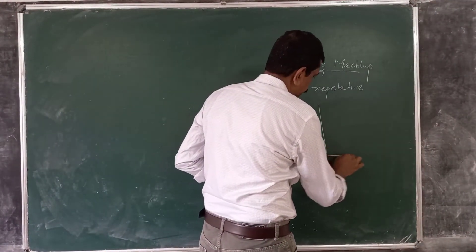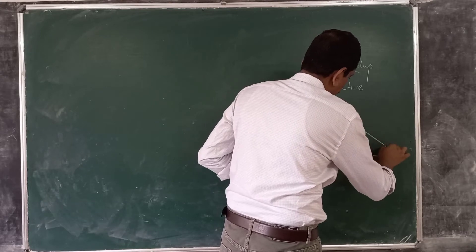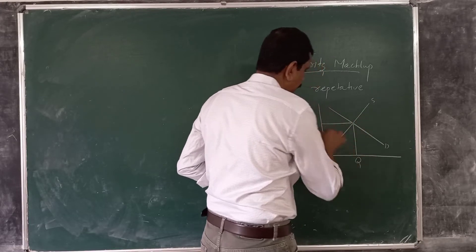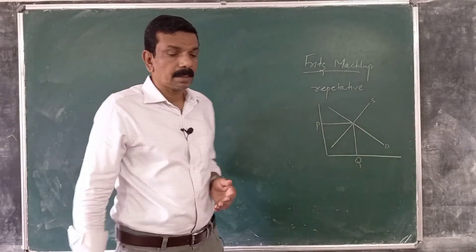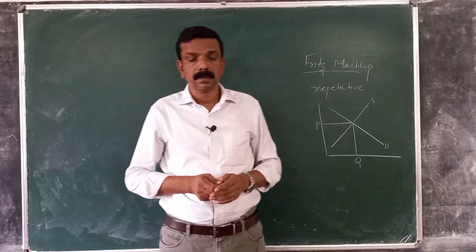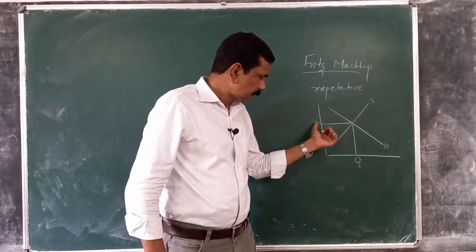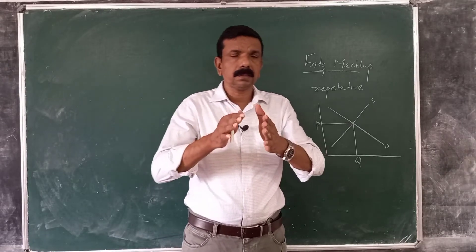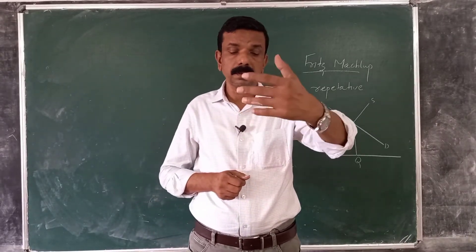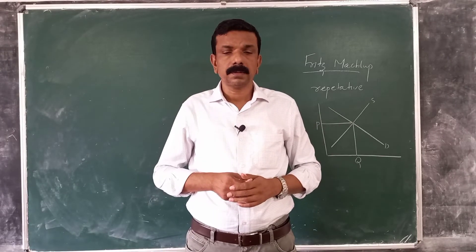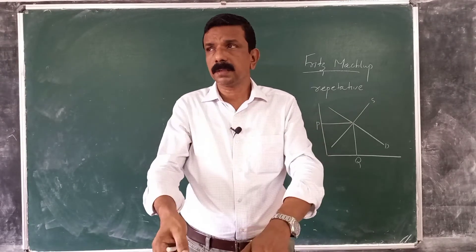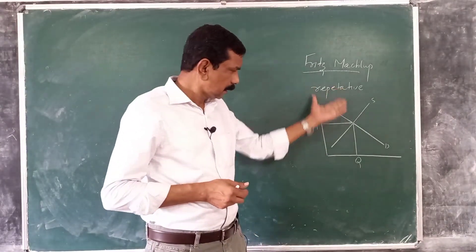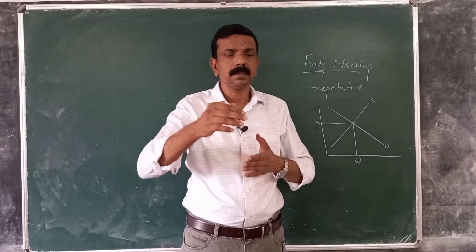Consider this graph. We have a demand curve, a supply curve, equilibrium quantity and price. If the price is above or below equilibrium, forces in the economy automatically restore equilibrium. So if there is any disequilibrium in the economy, forces in the economy restore equilibrium automatically, especially in a competitive economy.